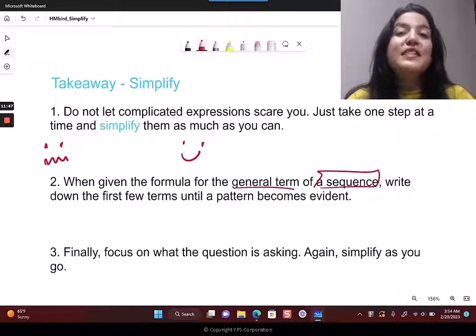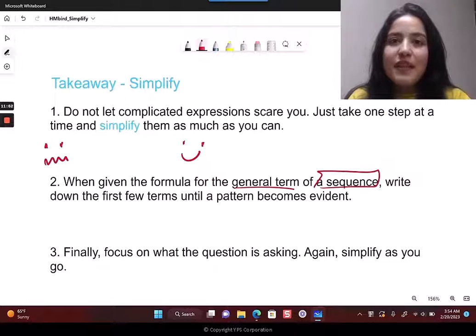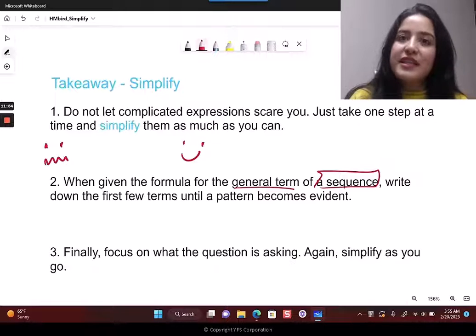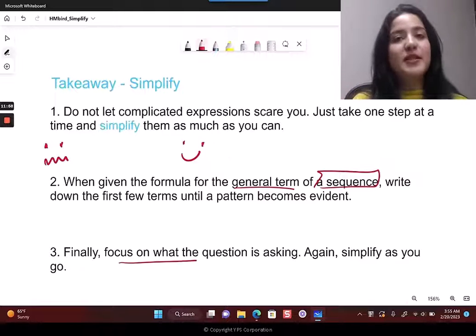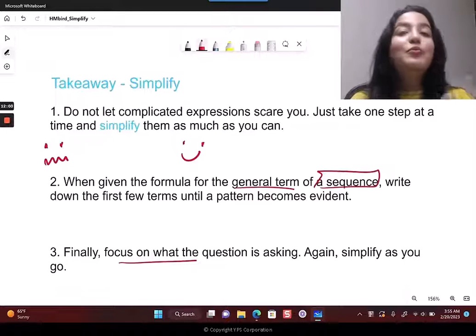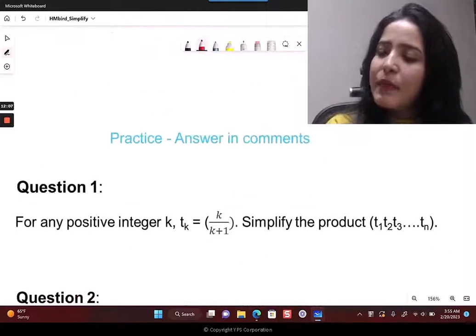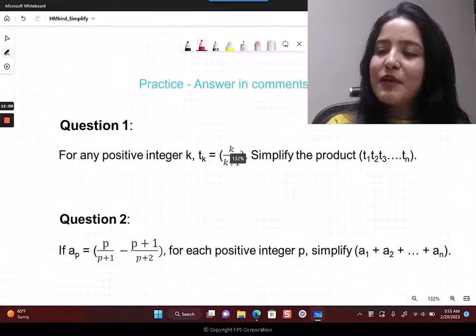You'll soon be able to see a pattern. In this case, see how you could cancel one numerator with the next denominator. It happened because you wrote things down. Nothing happens just in the head. Then just focus on what the question is asking. Here it was asking for the product - we wrote down the product, and then we could see how beautifully it really just gets simplified.